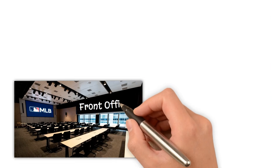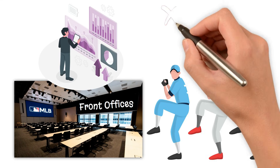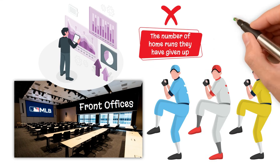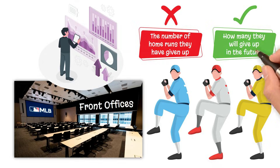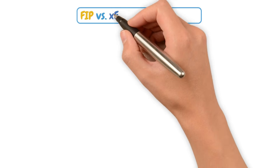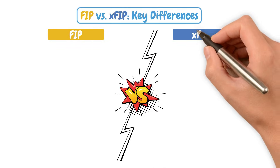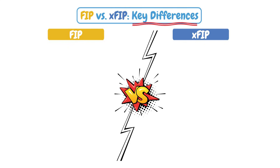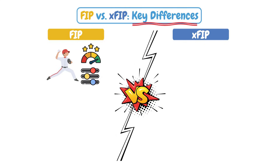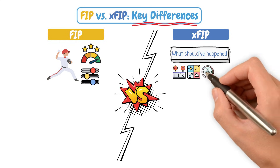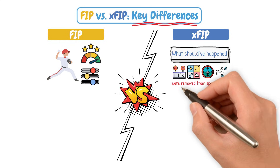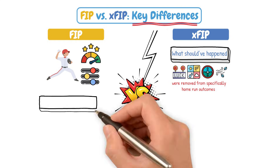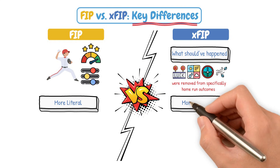XFIP smooths all of that out and is especially useful for projecting forward. Because when front offices are evaluating players, they don't care about the number of home runs a pitcher has given up — they care about how many they will give up in the future. FIP shows you how a pitcher actually performed based on outcomes they can control. XFIP shows you what should have happened if luck and randomness were removed from specifically home run outcomes. FIP is more literal; XFIP is slightly more predictive.